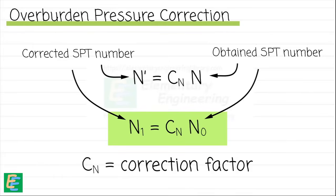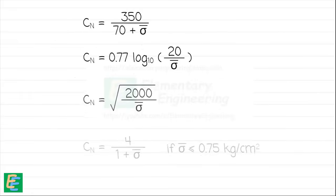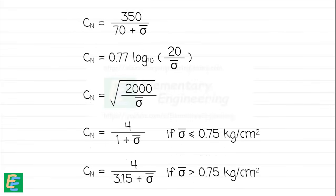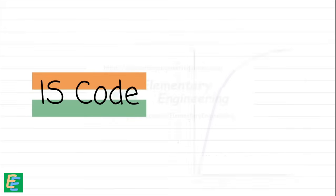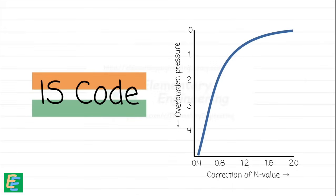This correction factor has been proposed by various scientists, each offering different equations tailored for specific ranges of overburden pressure and soil types. In India, IS code recommends the use of this graph for the determination of the correction factor.